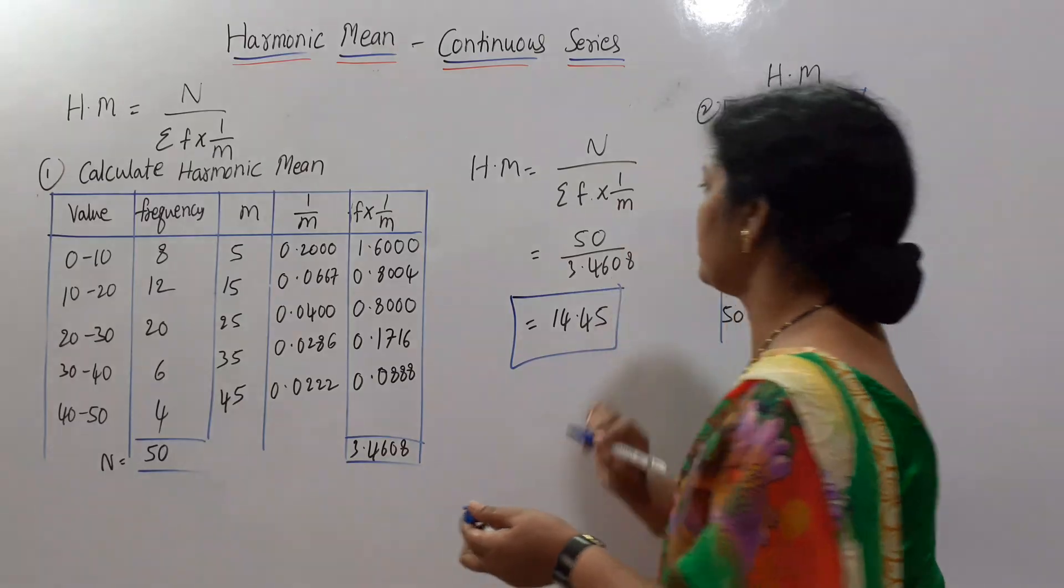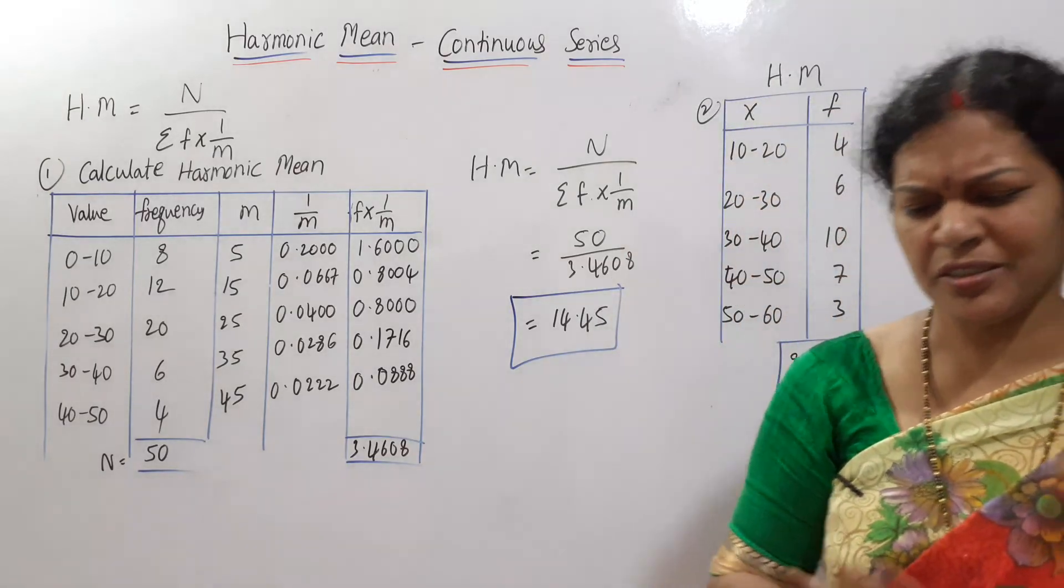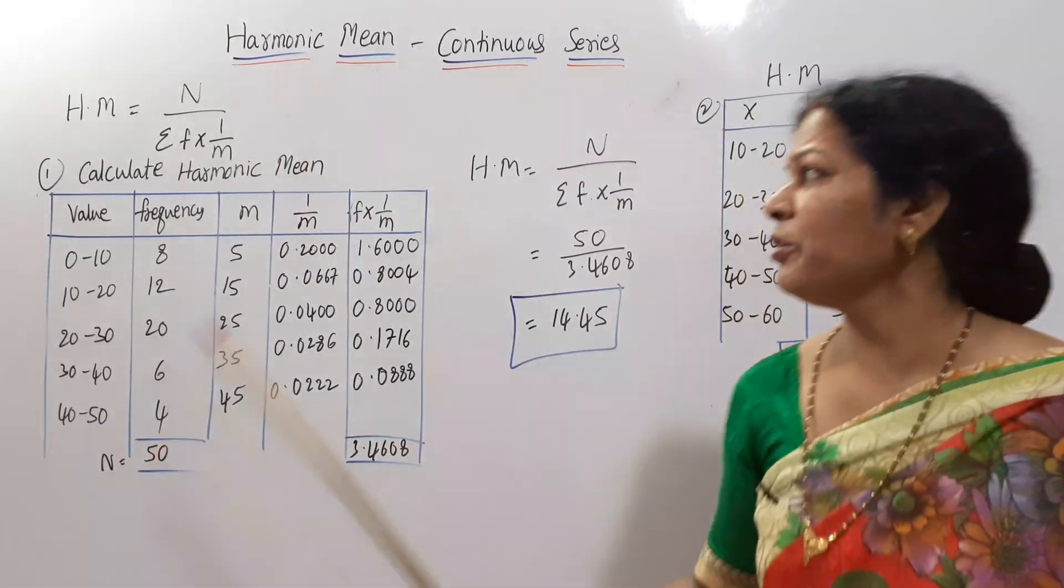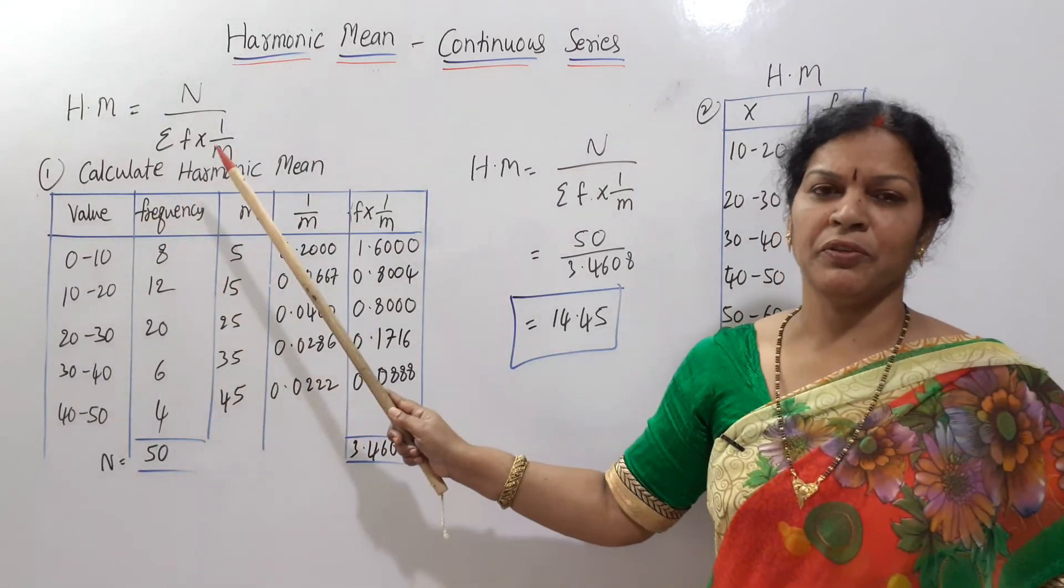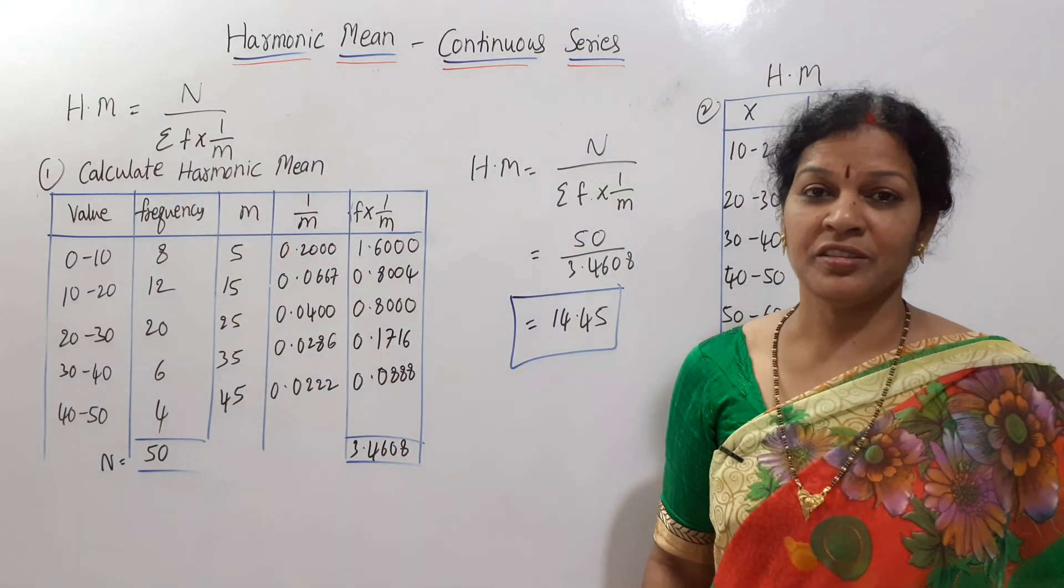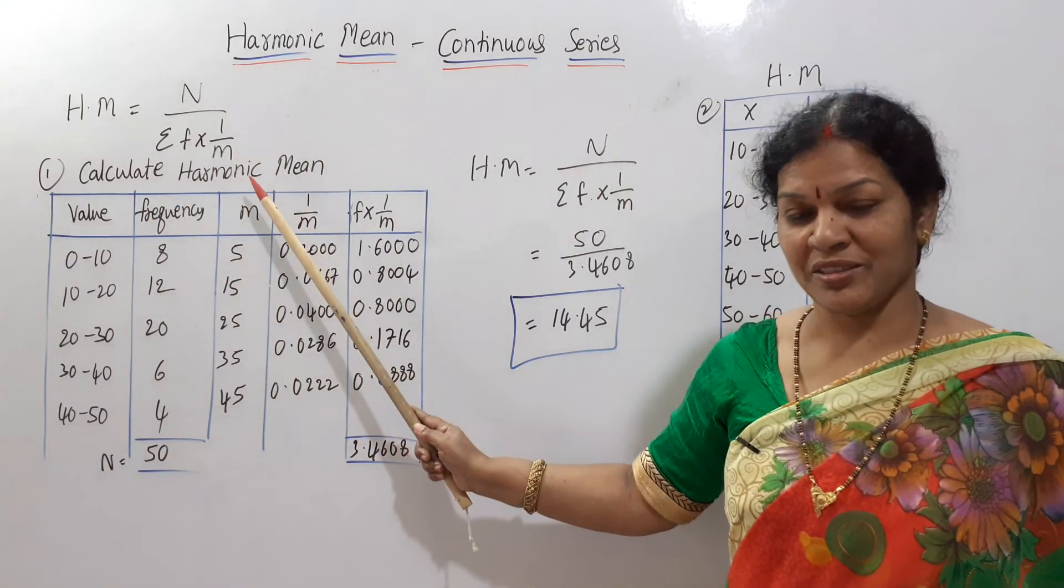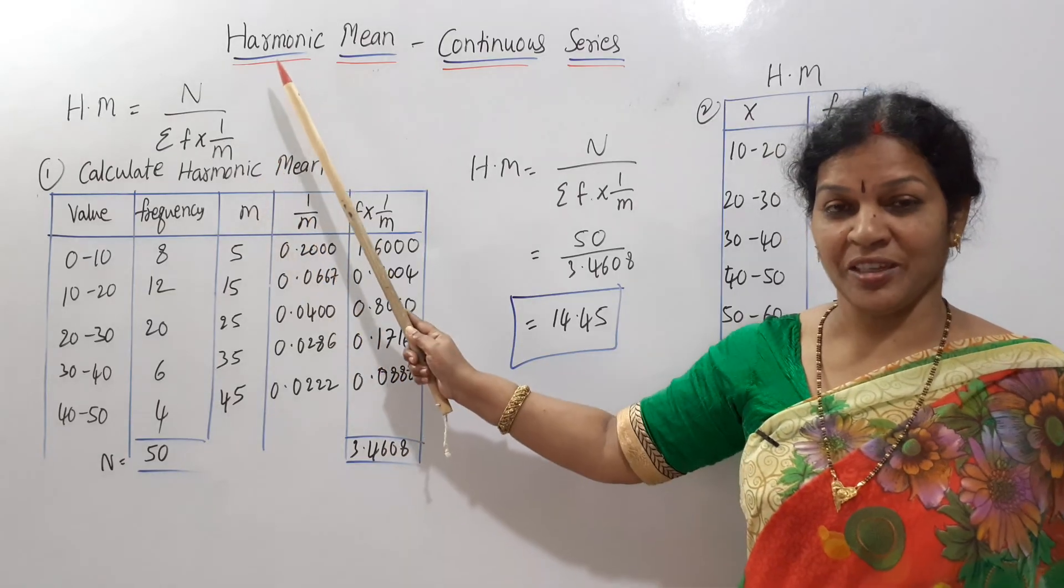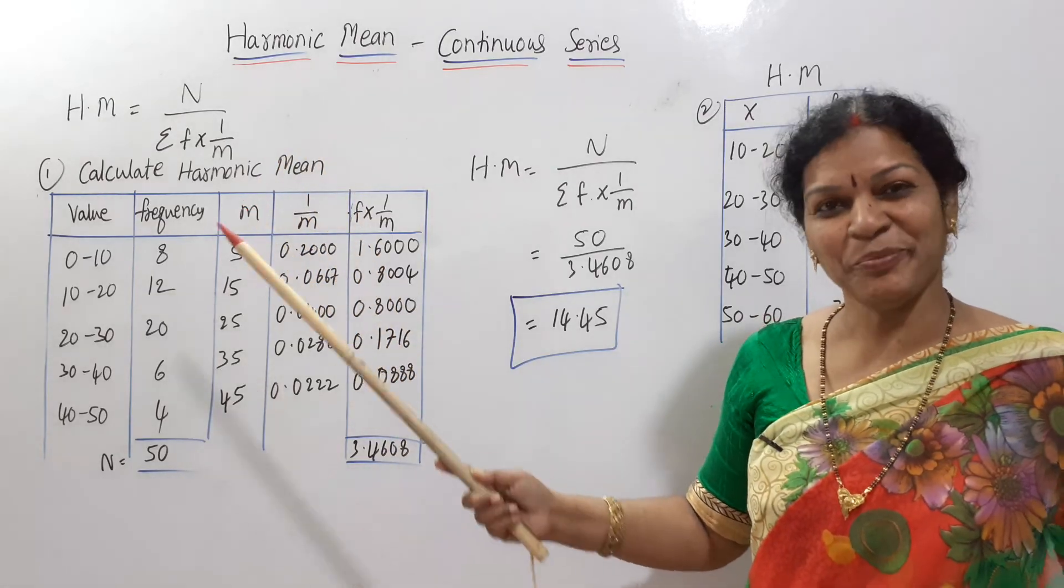14.45 is the harmonic mean answer. Your answer is this. Simple, nothing to worry. Only formula you remember: N by sigma F into 1 by M. Discrete series: N by F into 1 by X. Individual series: N by sigma 1 by X. Simple formulas, okay?